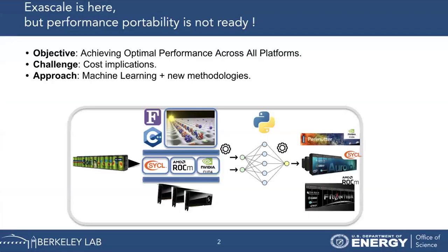If you attended my last GR presentation, this picture may sound familiar. Nowadays, modern supercomputers are based on accelerators from different vendors — for example, Perlmutter, Aurora, or Frontier. Scientific applications must be offloaded to GPUs to get performance.